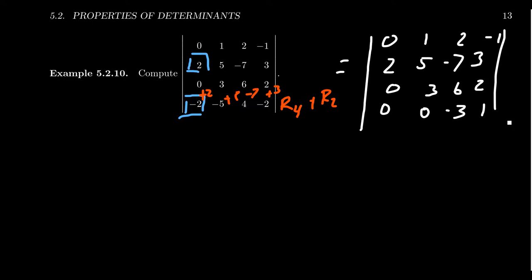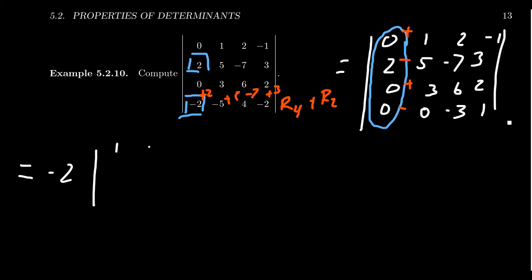Notice now the first column has entries 0, 2, 0, 0. If we cofactor expand along the first column, we pay attention to the signs: +, −, +, −. So when we cofactor expand, we get a negative 2 in front, and then there's only the 3×3 minor that's left: [1, 2, −1 / 3, 6, 2 / 0, −3, 1]. Everything else zeros out.